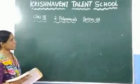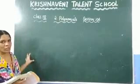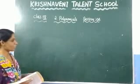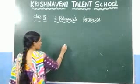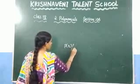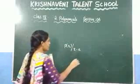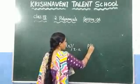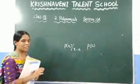In the last session we discussed about dividing polynomials and the remainder theorem. What the remainder theorem says is: if you are dividing a polynomial with a linear polynomial which is x minus k, the remainder is always in the form of p of k. This is what the remainder theorem states.